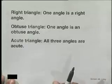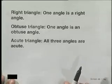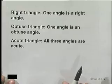Here it says a right triangle. A right triangle is a triangle where one of the angles is a right angle. If you remember, a right angle is one that equals 90 degrees.